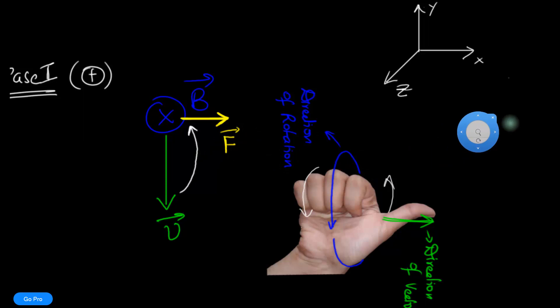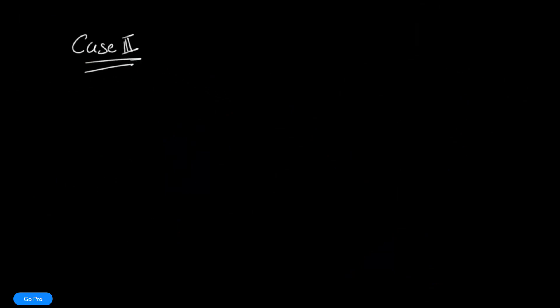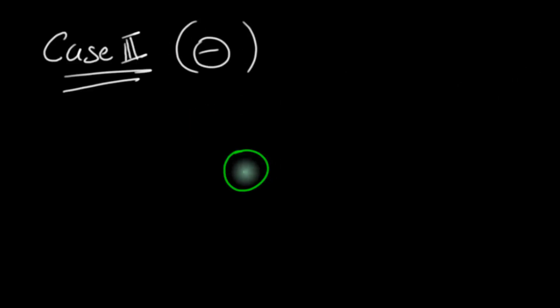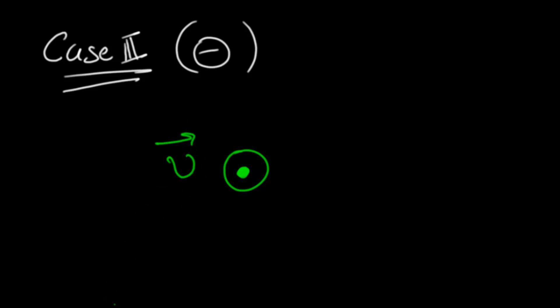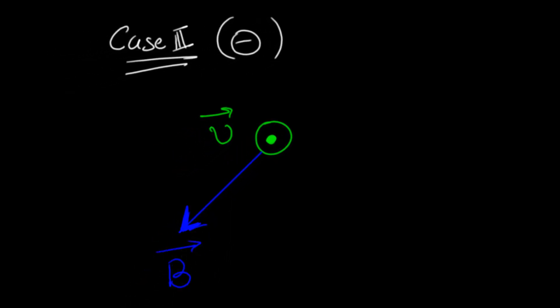Let's take one more case — case three, with a negative charge. The charge is coming out of the monitor, and the magnetic field is directed downwards. Pause the video and see if you can figure out the direction of the rotation, and then figure out the direction of the vector v cross B.